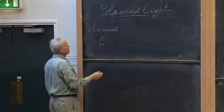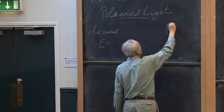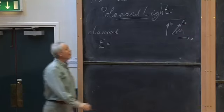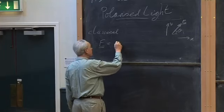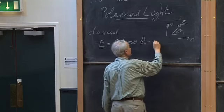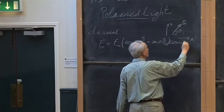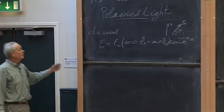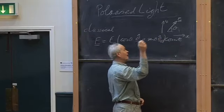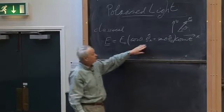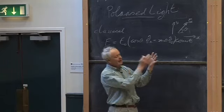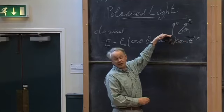Suppose we have light with the electric vector at angle θ from the x axis. We can write the electric field as E = E₀ [cos θ · e_x + sin θ · e_y] cos(ωt). We've written the electric vector of a plane-polarized electromagnetic wave traveling in the z direction, oscillating with angular frequency ω.